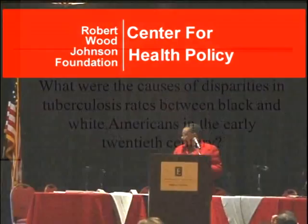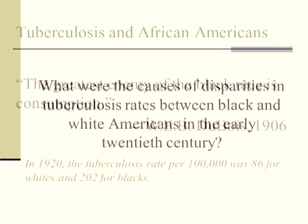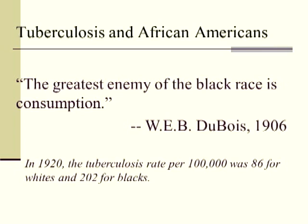W.E.B. Du Bois in 1906 said that the greatest enemy of the Black race is consumption — which is what tuberculosis was called in the late 19th and early 20th century. According to Du Bois, there was a large discrepancy in the tuberculosis rate between African Americans and white Americans.